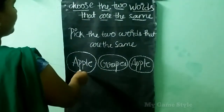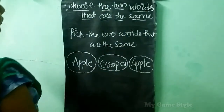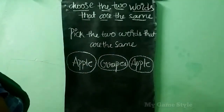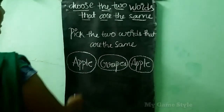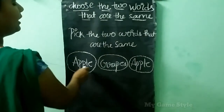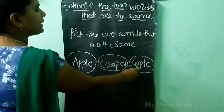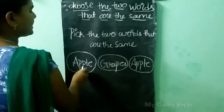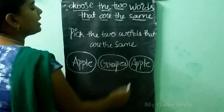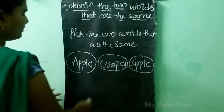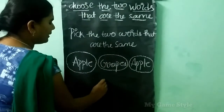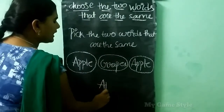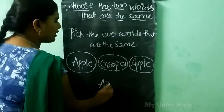Which words are the same, children? Apple and it is also Apple. This word is the same. So Apple is the correct answer.